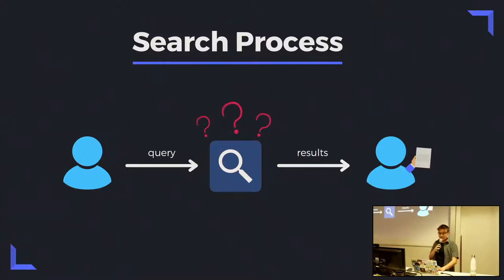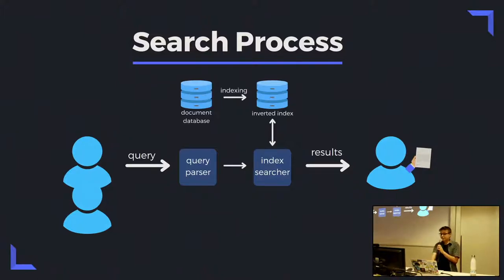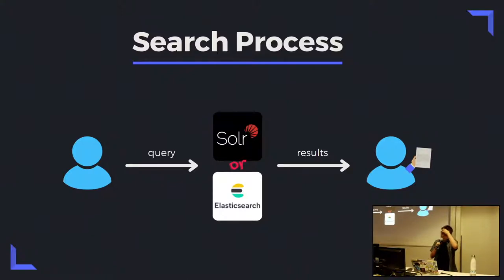A more expanded but still simplified diagram: you have a query that gets sent through, this query is parsed, those terms are searched against an index which was built beforehand, and we get some results. Implementing all of that from scratch is really complicated, so a lot of times smaller scale uses of search just build on existing platforms. The two big ones are Solr, which is by Apache, and Elasticsearch, which is by Elastic. Those frameworks provide ways to do all this indexing and query parsing in a way you can customize for your specific situation rather than writing everything from scratch.